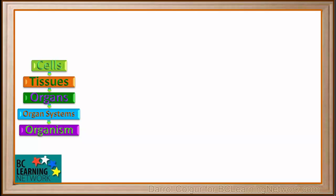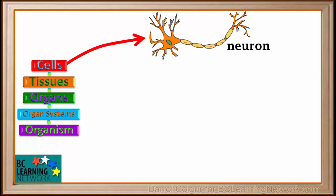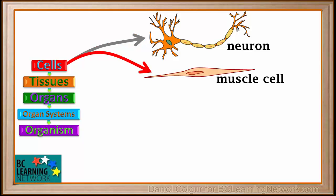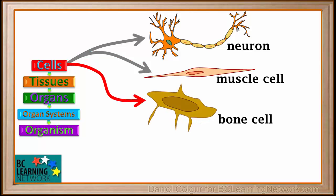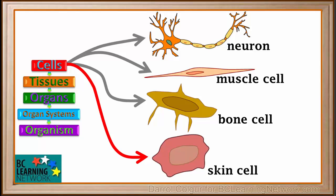The cell is the basic biological unit of all living things. One example of a cell is a neuron or nerve cell. Another type of cell is a muscle cell. Here is a bone cell. And here is a skin cell.